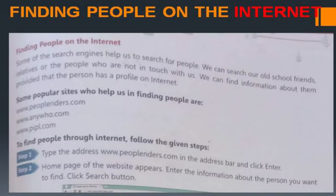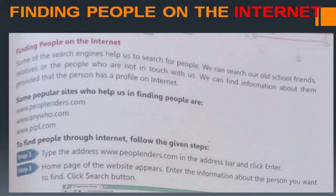Finding people on the internet: some search engines help us search for people. We can find old school friends, relatives, or people we have lost touch with, provided they have a profile on the internet. Popular sites for finding people include PeopleFinders, AnyWho, and Pipl.com. Nowadays we also use Facebook and Instagram to find people.